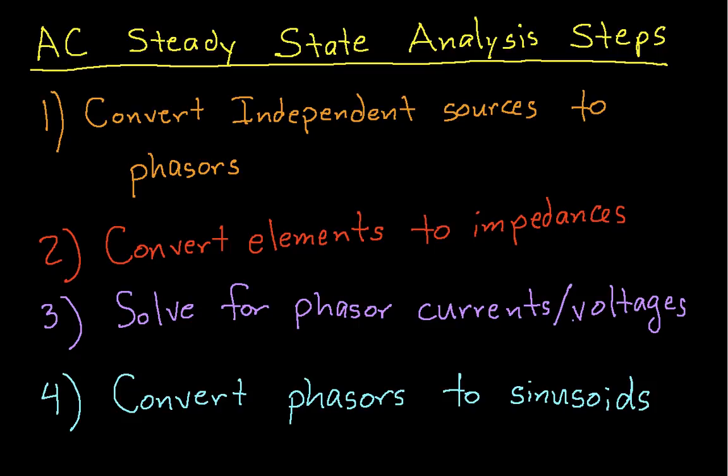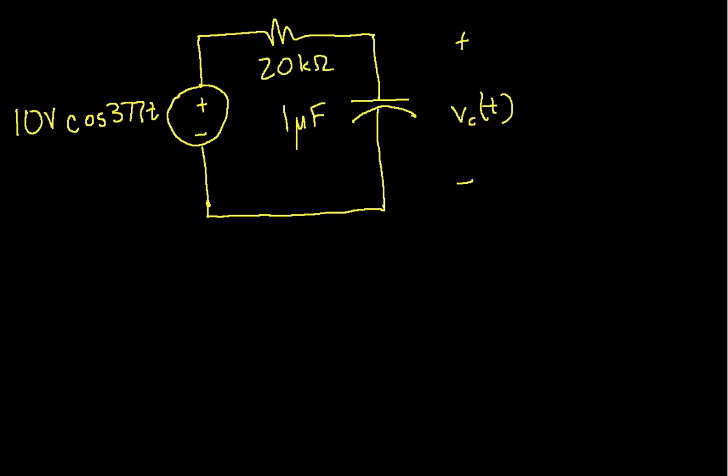So let's go back to our circuit that we're going to use as an example. And the first thing we need to do is convert our independent source into a phasor. Now to do this, we notice first that the frequency, the radian frequency, is 377. So I'll write this up here because we'll need to know this later. Then the next thing I notice is I have an amplitude of 10 and a phase angle of 0. So in phasor notation, this source becomes 10 volts at an angle of 0 degrees. That was pretty easy, don't you think?